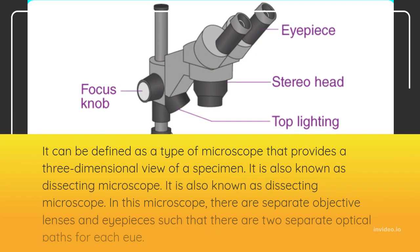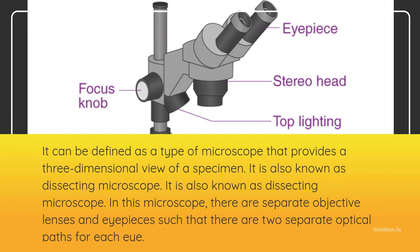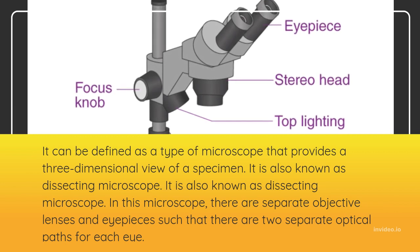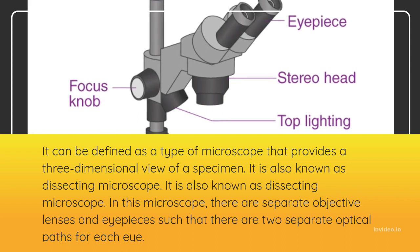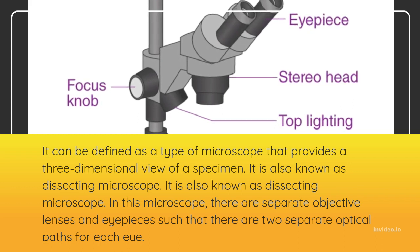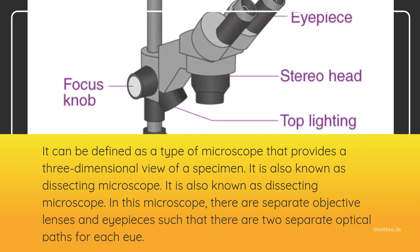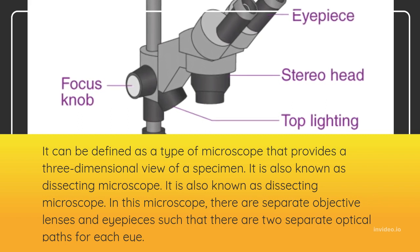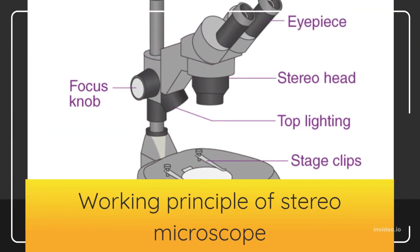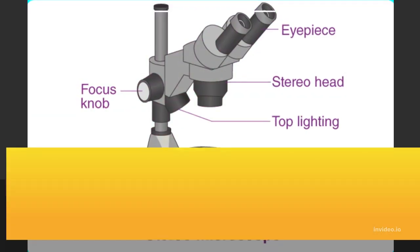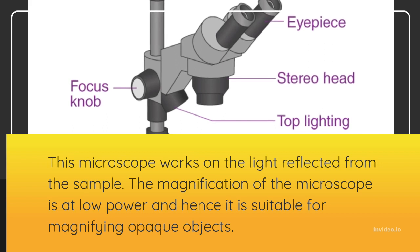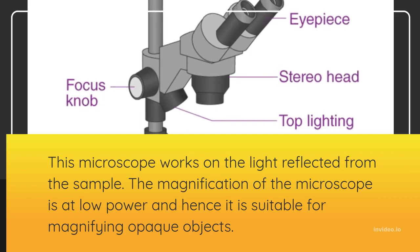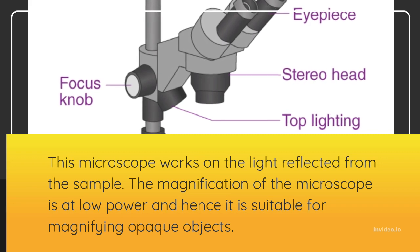A Stereo Microscope can be defined as a type of microscope that provides a three-dimensional view of a specimen. It is also known as a Dissecting Microscope. In this microscope, there are separate objective lenses and eyepieces such that there are two separate optical parts for each eye. This microscope works on the light reflected from the sample. The magnification of the microscope is at low power and hence it is suitable for magnifying opaque objects.